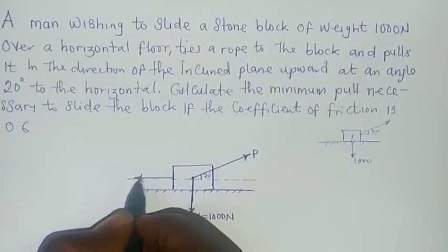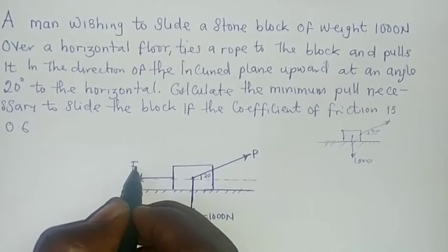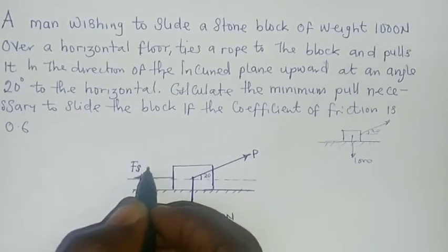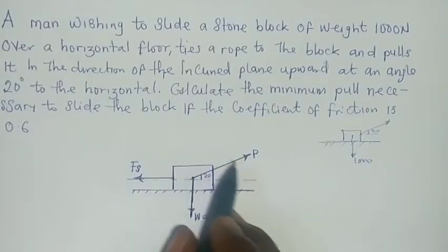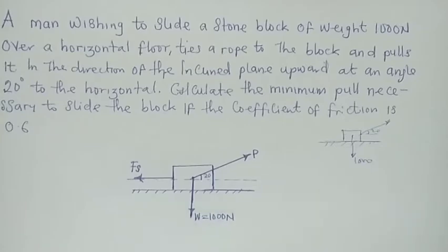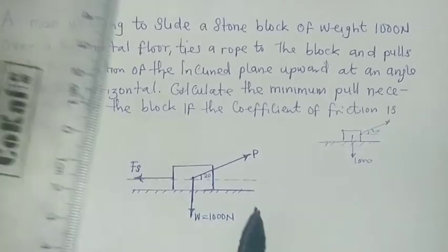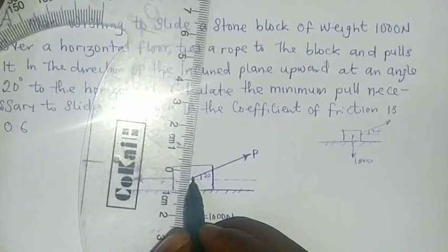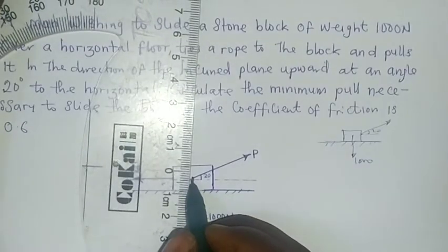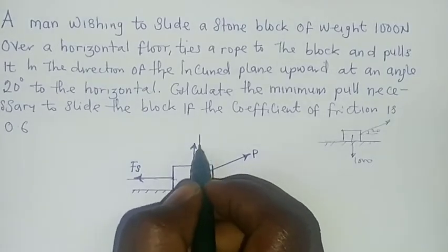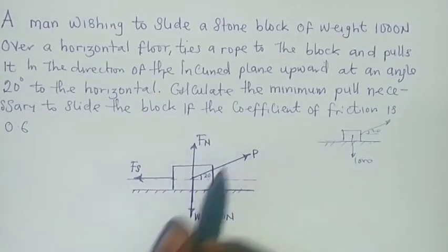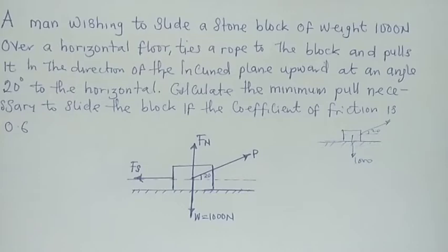If you look at this, in every block that is sitting on a horizontal floor there's always a normal force that acts perpendicular to the surface. We call that force FN. It's called the reaction force, it's always equal and opposite the action force.